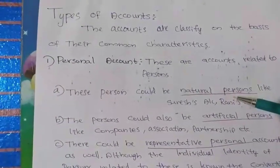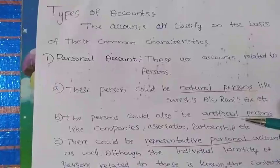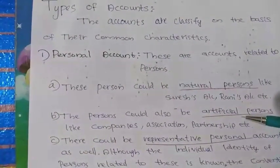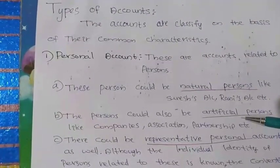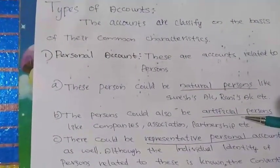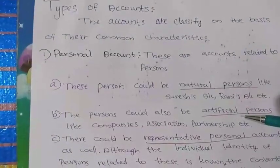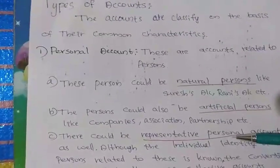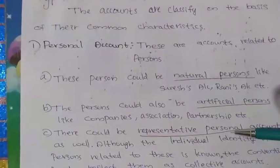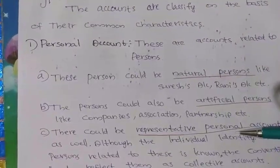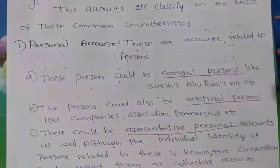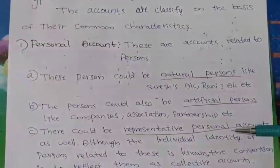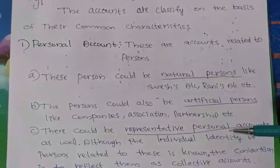The second one is Artificial Persons Account — that includes persons, companies, and organizations. There are also representative personal accounts in this classification.